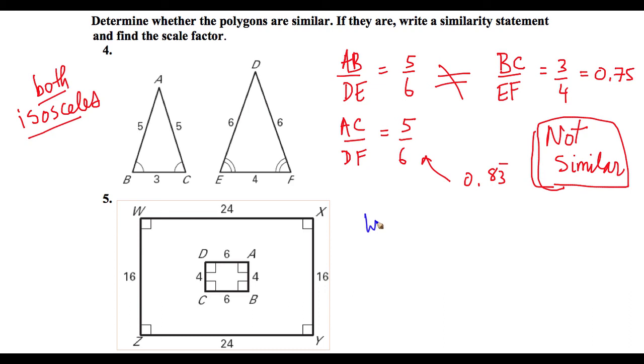So let's check WX over DA. This will give us 24 over 6, which is equal to 4. We don't have to check the bottom here. You can see that BC and ZY, they're going to be the same proportion as this. So we just have to check the vertical lengths here. XY over AB, and this will give us 16 over 4, which is equal to 4 as well.